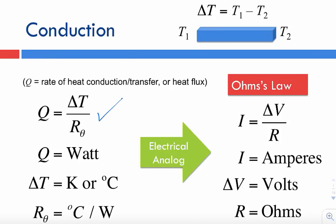In the previous segment, we looked at different mechanisms for heat conduction. I would like to review the basic conduction equation: heat Q is equal to delta T, the temperature differential, divided by the thermal resistance R.